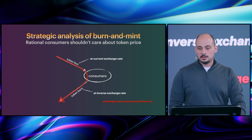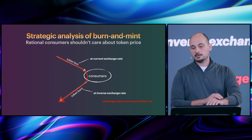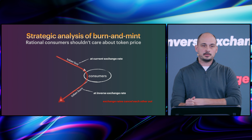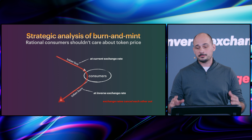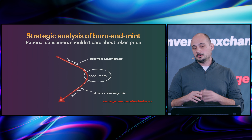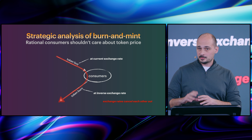To start getting into what is rational — the first component is that consumers don't care about the token price. As I said, they could be speculators too, but that's a different part of their identity. As a consumer, if the service costs $50, it's $50 — the token price doesn't matter. Whether the token is one cent or one dollar, you're still going to pay $50 for the service, perhaps a little more for a value-added service that handles the token purchase.